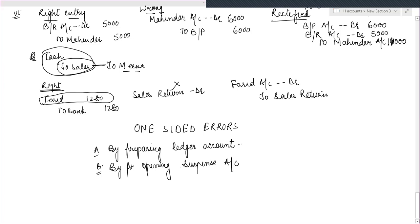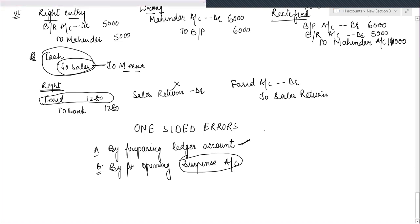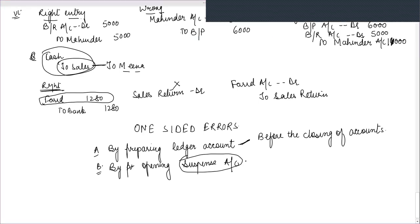This ledger account is prepared only if the accounts are not closed — that is, before the closing of accounts. The suspense account is opened after the closing of accounts.